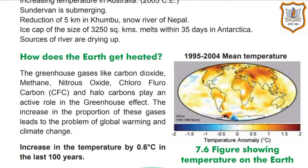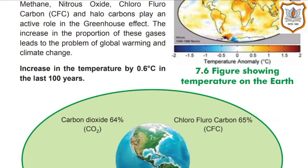How does the Earth get heated? Greenhouse gases like carbon dioxide, methane, nitrous oxide, chlorofluorocarbon, and halocarbons play an active role in the greenhouse effect. The increase in the proportion of these gases leads to global warming and climate change. There has been an increase in temperature by 0.6 degrees centigrade in the last 100 years.